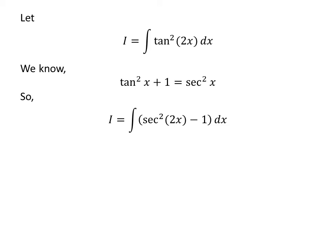Thus i is equal to integral of square of secant of 2 times x minus 1 with respect to x. Now let us apply the linearity property of integral. We get i is equal to integral of square of secant of 2 times x with respect to x minus integral of 1 with respect to x.